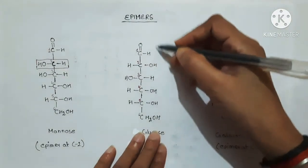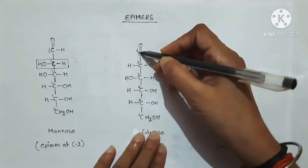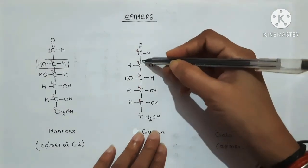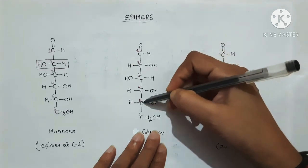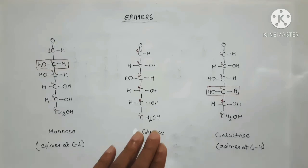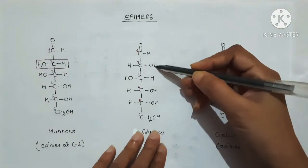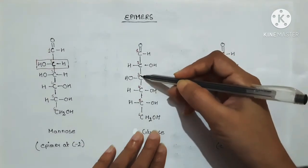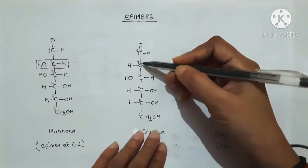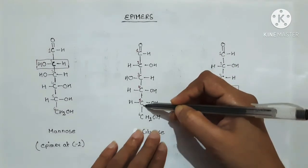In the glucose chain structure, this is the aldehyde group and we always give it the number one. This is a six-carbon structure and you can see that there are four asymmetric carbons. Asymmetric carbons are those carbons which are attached with four different groups. Carbon 2, carbon 3, carbon 4, and carbon 5 are all asymmetric carbons in glucose.